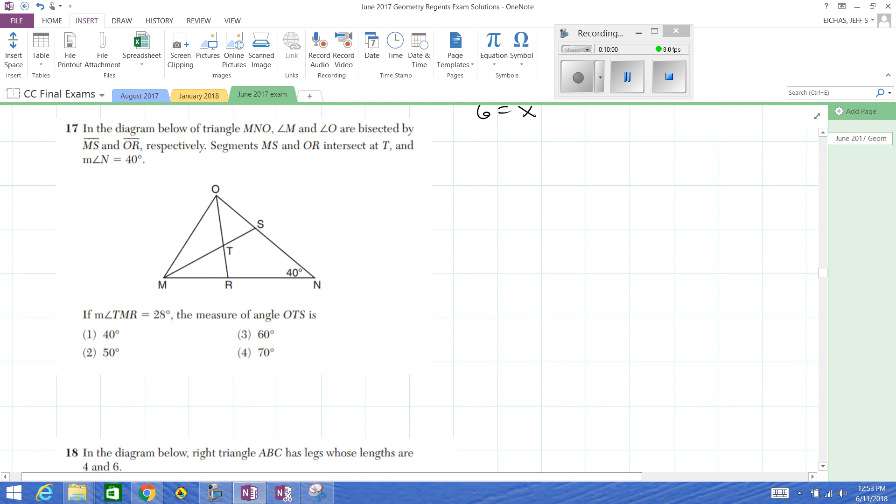For 17. So these are angle bisectors, but we don't know if those are the same. If TMR is 28, then this is 28 because it was bisected, so it created equal halves. The measure of angle OTS is what we're after. O to T to S. So we want, we're searching for this angle right here. What information do we have? Let's look at this. There's one thing that's standing out to me right now.